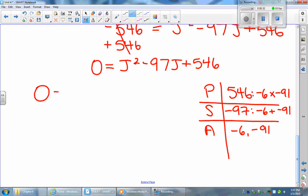And I'm going to put them back into my factored form: j minus 6 and j minus 91. Remember that if I was to multiply this back together and check, it should get me back to my original quadratic equation. So now I know that either j minus 6 is equal to 0 or j minus 91 is equal to 0, so I need to solve each one for j.